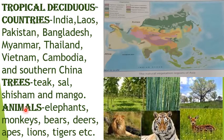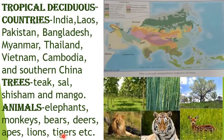Animals such as elephants, monkeys, bears, deer, apes, lions and tiger are found in the tropical deciduous forest region. The peculiar characteristic of this vegetation is that they shed their leaves once in a year during the dry season and start growing leaves again at the start of the rainy season.